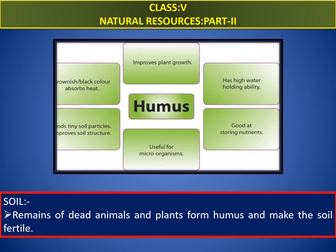Remains of dead animals and plants form humus and make the soil fertile. How do we increase humus? Humus is what is left after organic matter decomposes. Each time you add organic matter to the soil, it will increase the amount of humus in the soil. It is a slow process, but if organic matter is added each year, the amount of humus will continue to increase.